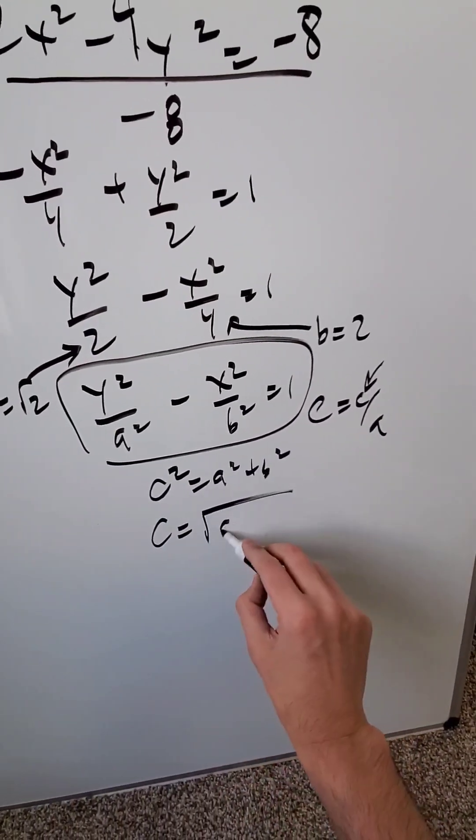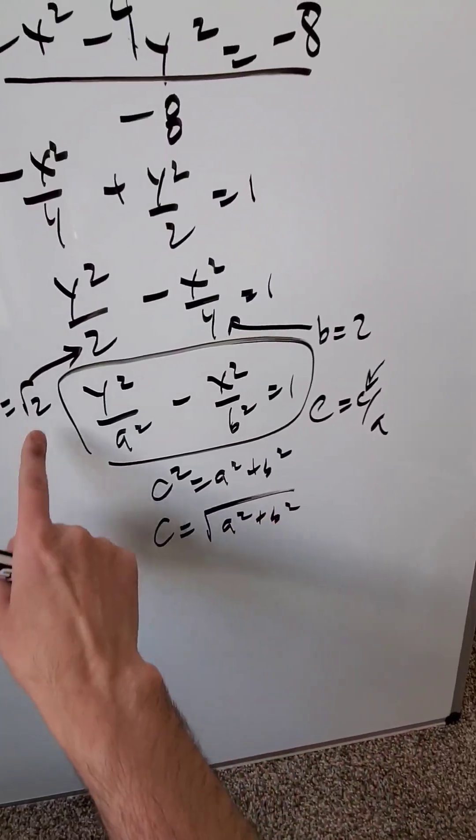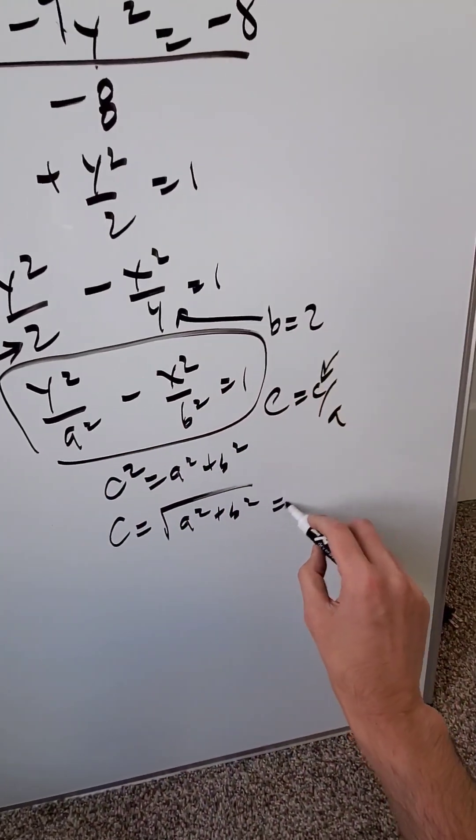c is going to be square root of a² + b² which is 2 + 4 and root of that, √6.